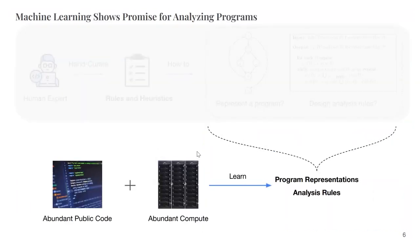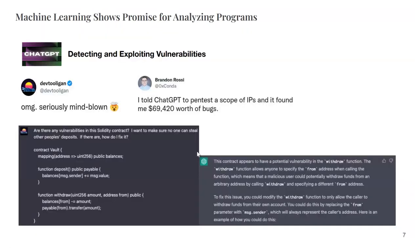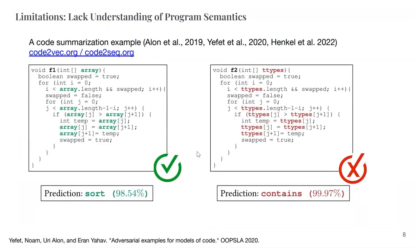Recently, machine learning advancements have shown some promise — for example, ChatGPT and GPT-4 have shown impressive performance for many security-related program analysis tasks, like detecting vulnerabilities or analyzing malware, even with natural language explanations. But machine learning code models, like any machine learning models, have been shown to lack robustness and generalizability.